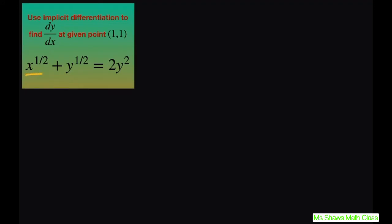This is going to be 1 half x to the negative 1 half, times derivative of x with respect to x, plus 1 half y to the negative 1 half power, times derivative of y with respect to x, equals 4y times derivative of y with respect to x.